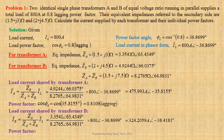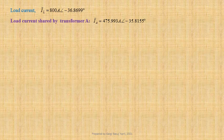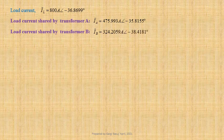Operating power factor of transformer B, cos phi B, equals cos of 38.4181 degree, that gives us 0.7835 lagging. Load current IL equals 800 ampere at an angle minus 36.8699 degree. Load current shared by transformer A: IA equals 475.993 ampere at an angle minus 35.8155 degree. Load current shared by transformer B: IB equals 324.2059 ampere at an angle minus 38.4181 degree.